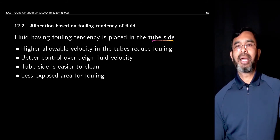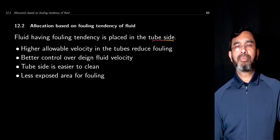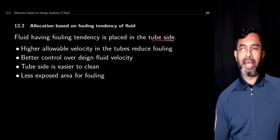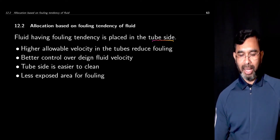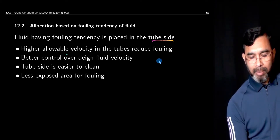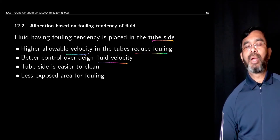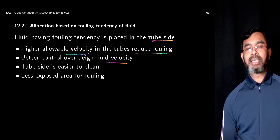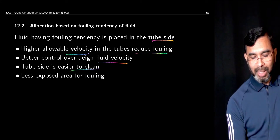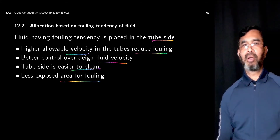If fouling fluid is placed on the shell side, fouling will take place on the outer side of the tubes as well as on the shell, baffles, and other construction items. On the tube side we can allow higher velocity and thus reduce fouling. We have better control over the design fluid velocity for the tube side, the tube side is easier to clean, and there is less exposed area for fouling.